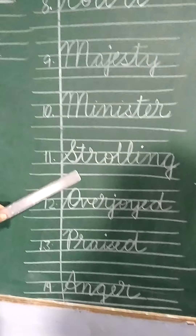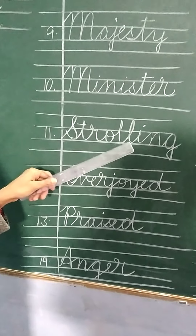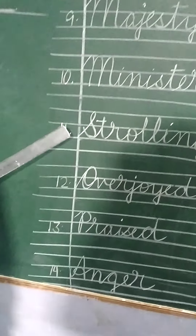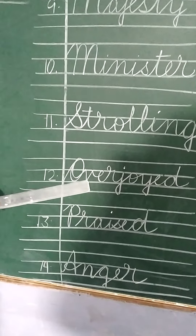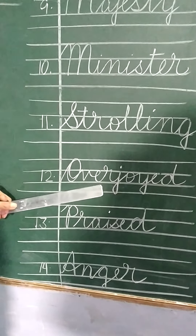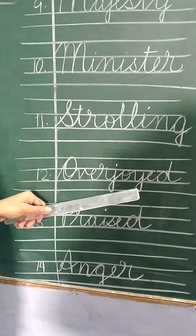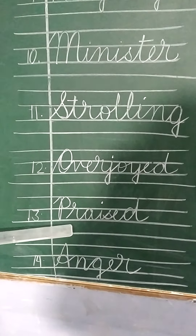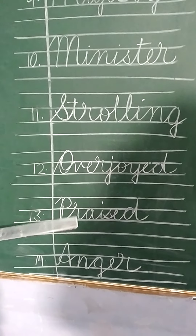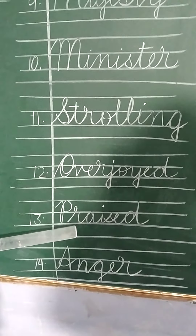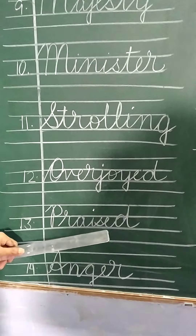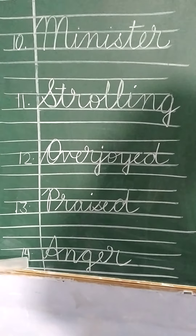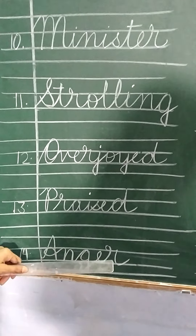Number eleven is strolling — S-T-R-O-L-L-I-N-G, strolling. Number twelve is overjoyed — O-V-E-R-J-O-Y-E-D, overjoyed. Number thirteen is praised, meaning admire, prashansa karna — P-R-A-I-S-E-D, praised. And the last one, number fourteen, is anger — A-N-G-E-R, anger.